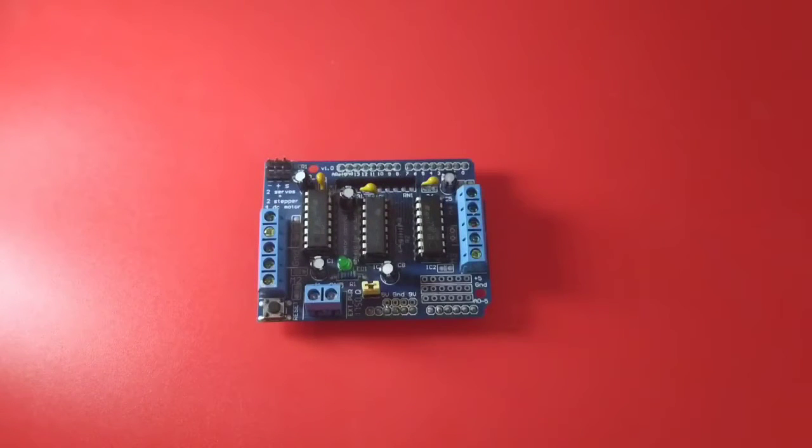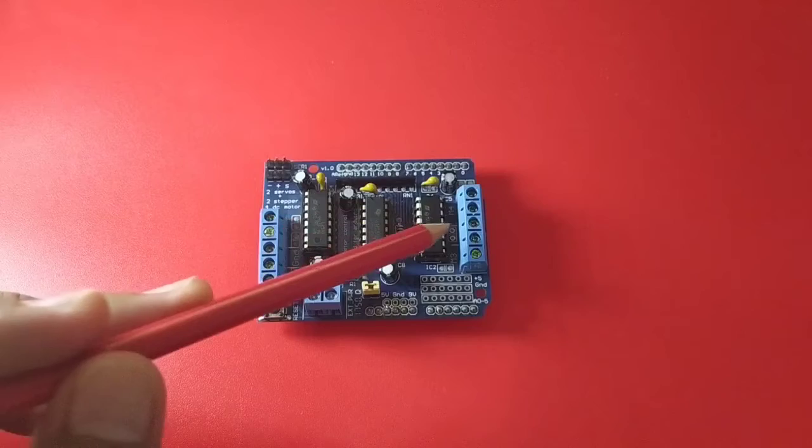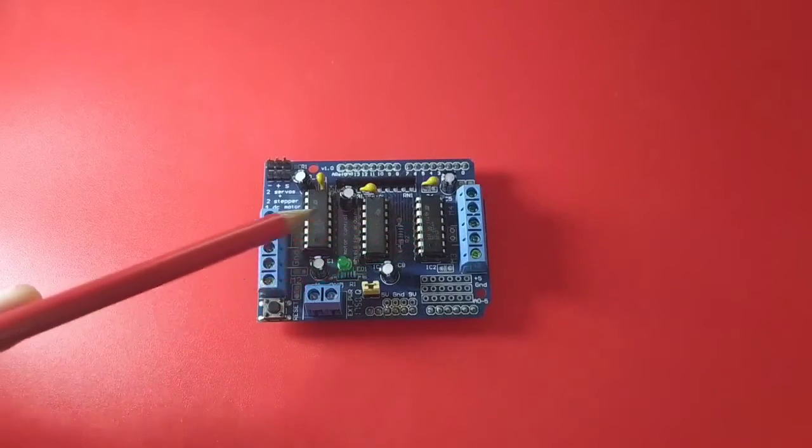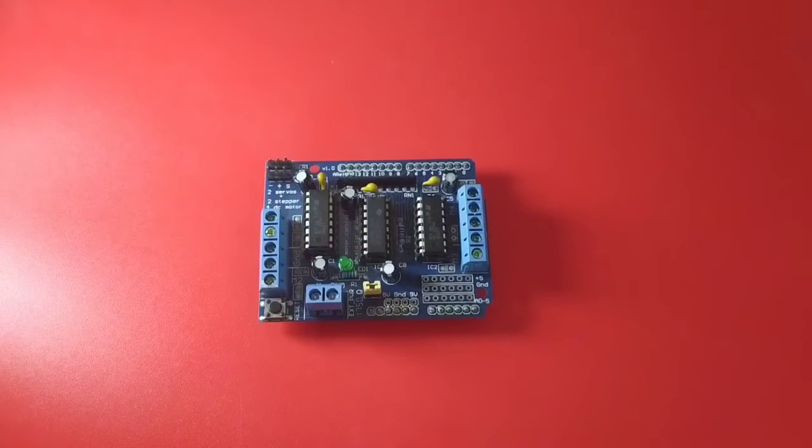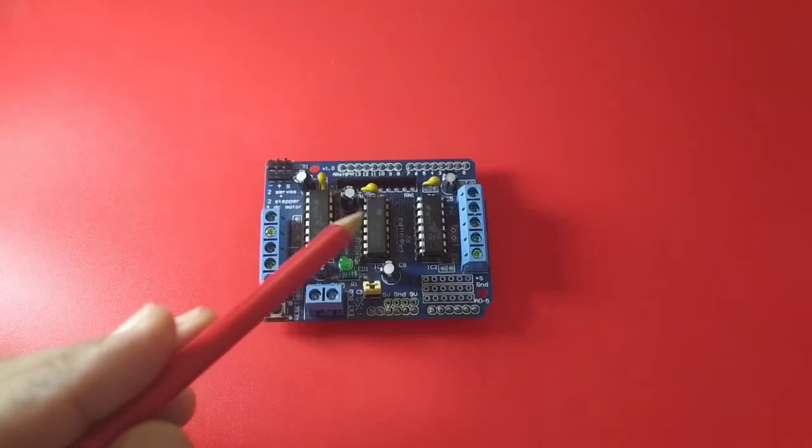It has two pieces of L293D Dual H-Bridge Motor Driver IC to be able to provide control to a total of 4 DC motors. This is the two L293D chip. And it also has 748C-595 chip registers to minimize the use of pins. This one.